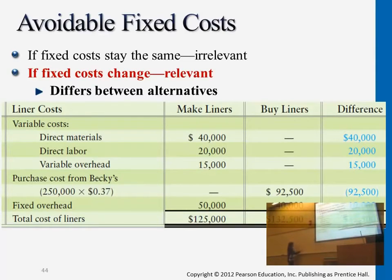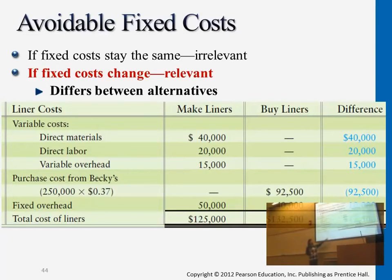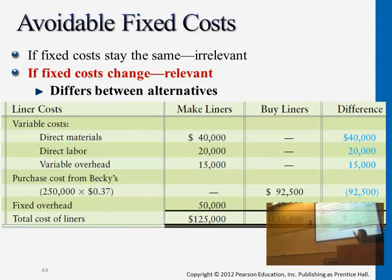The purchase price we're paying others is $92,500. Even though we outsource, we're still using fixed overhead of $40,000. Altogether, this is actually more than producing it in-house. So the decision here would be to still produce it in-house, because the total outsourcing cost is too much. The purchase price of $92,500 covers the variable cost, but it doesn't cover fixed costs.